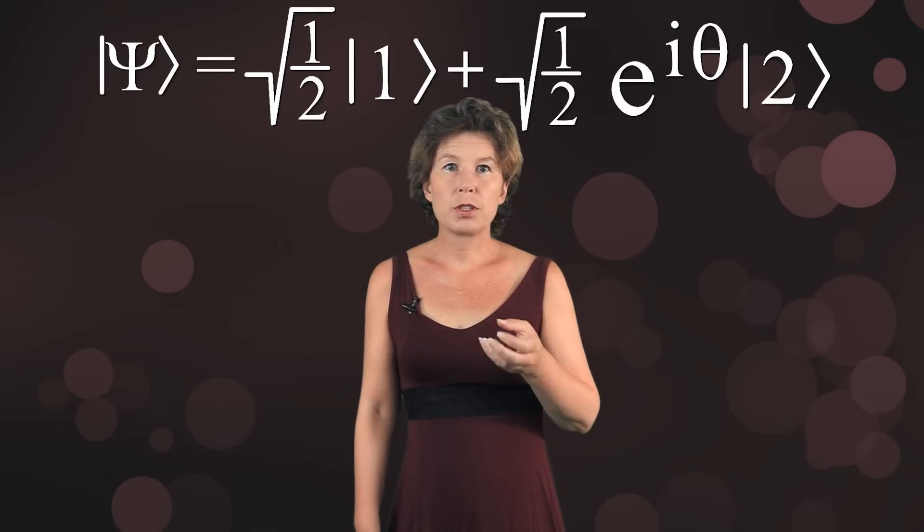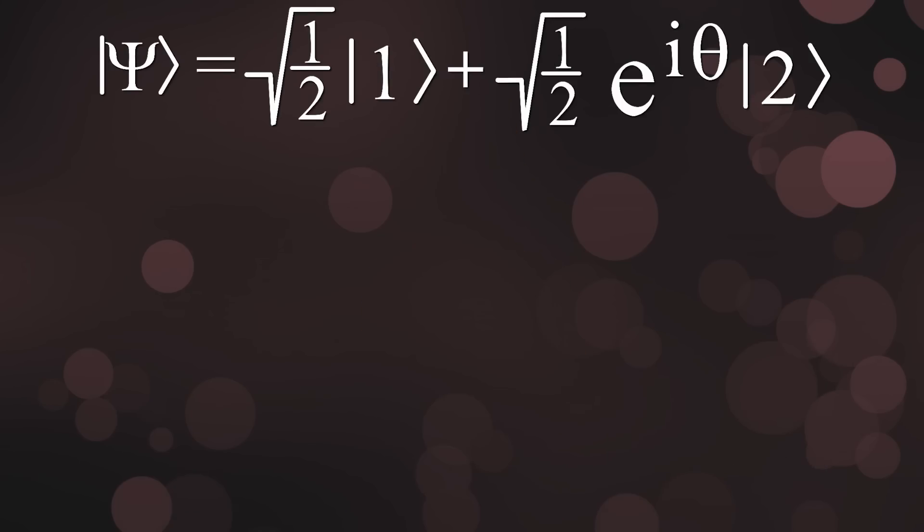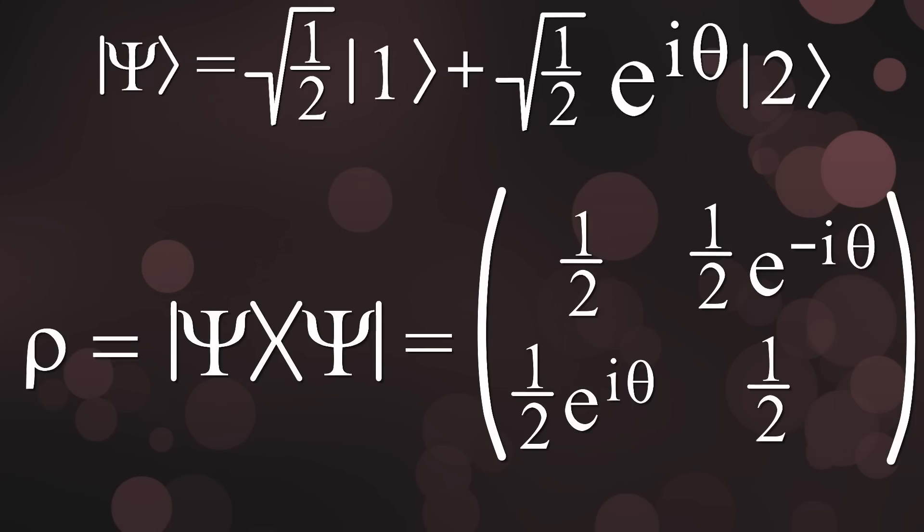For the simple case of our superposition, the density matrix looks like this. It has one over two in each entry because of all the square roots of two, and the off-diagonal elements also have this complex factor with the phase.